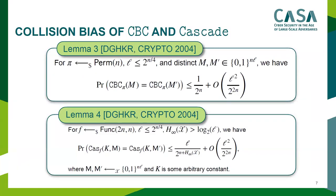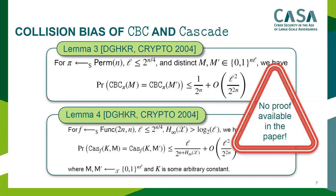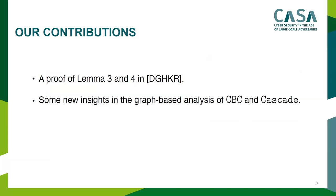For these two constructions, Dodis et al. gave two lemmas showing they are very good universal hash functions with bias bounded by l-squared over two to the two-n. For moderately long messages up to two to the n over four, one can get really good extractors from these two hash functions. However, there is no proof in the paper — the authors say the proof will be in the full version, but to the best of our knowledge there is no full version.